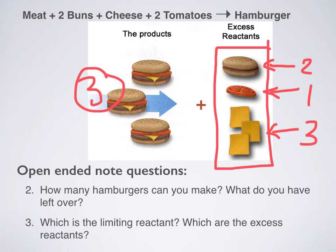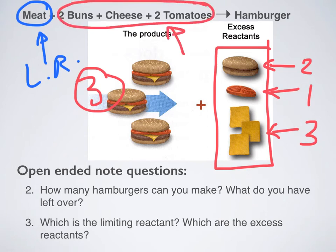So in this question, what was my limiting reactant? My limiting reactant was the meat. That's the thing I ran out of first. So that would be my limiting reactant. What were my excess reactants? Everything else. I had extra of everything else. These are my excess reactants.